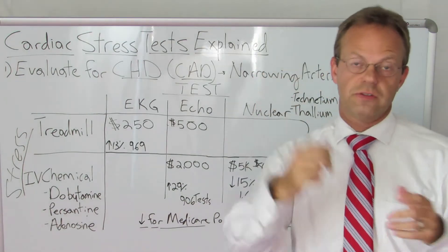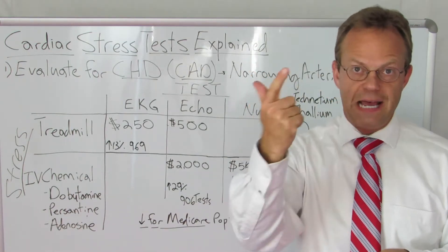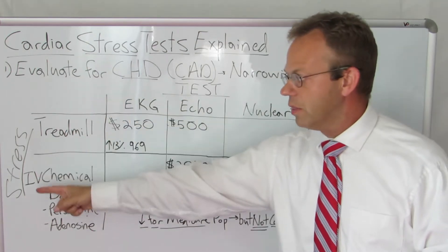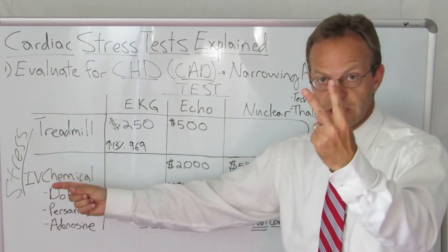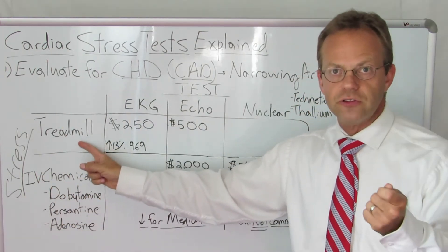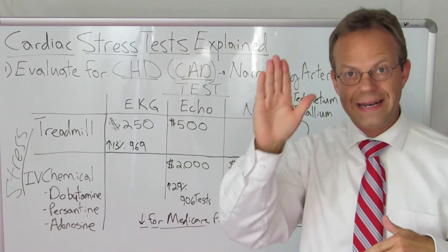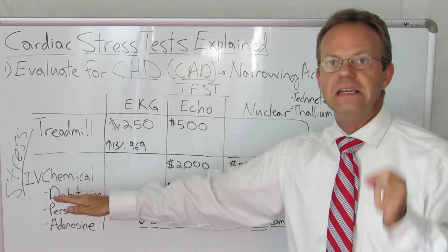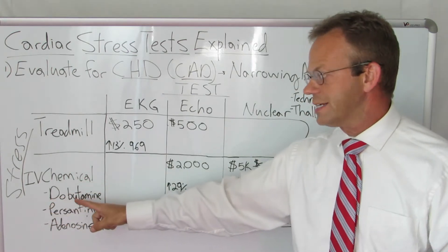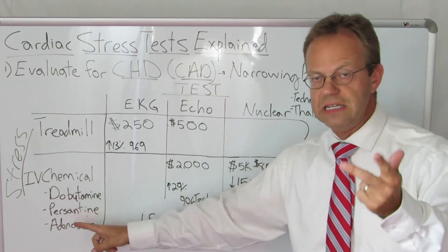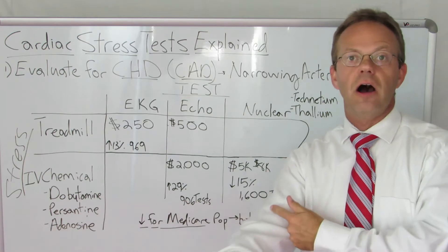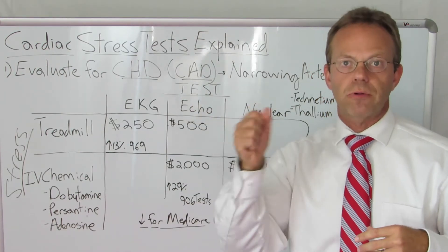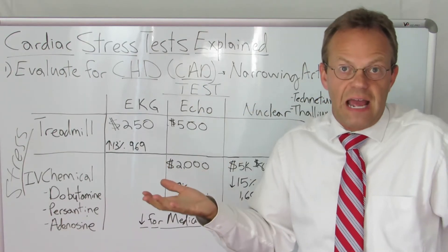Stress tests have two parts: the stress and the test. On the stress side, there is a treadmill stress where a person walks very vigorously on an inclined treadmill, and then there is an IV chemical stress where they inject either dobutamine, persantine, or adenosine into the arm, and it causes the heart to beat real hard without the person having to exercise.